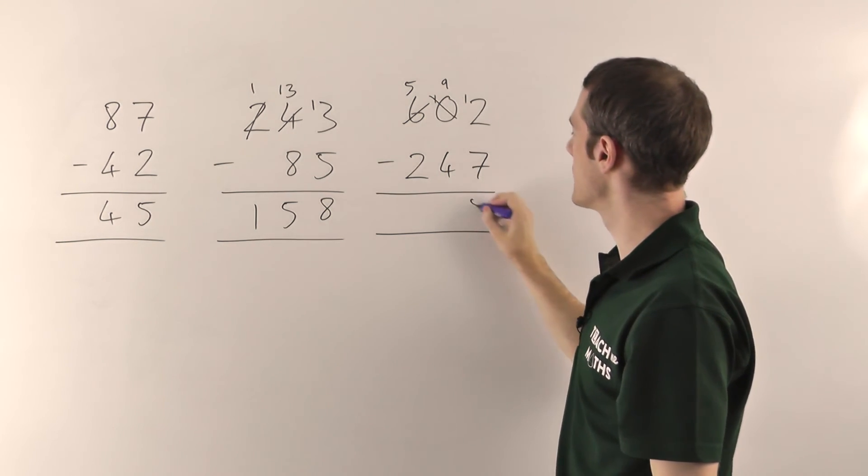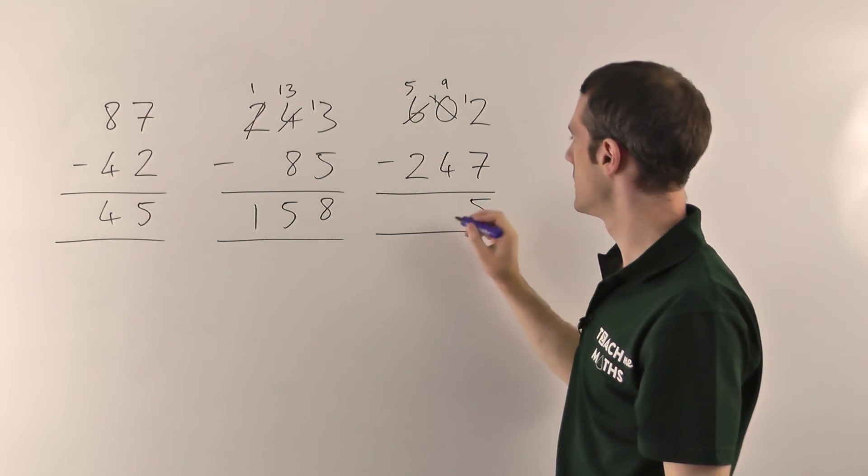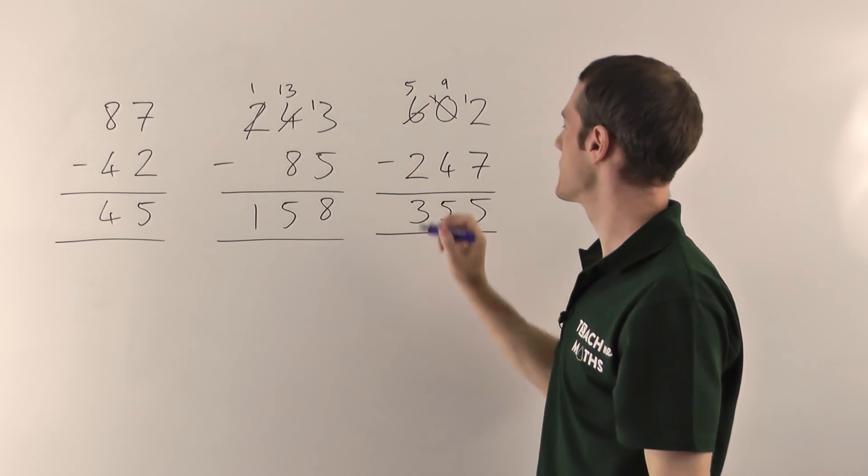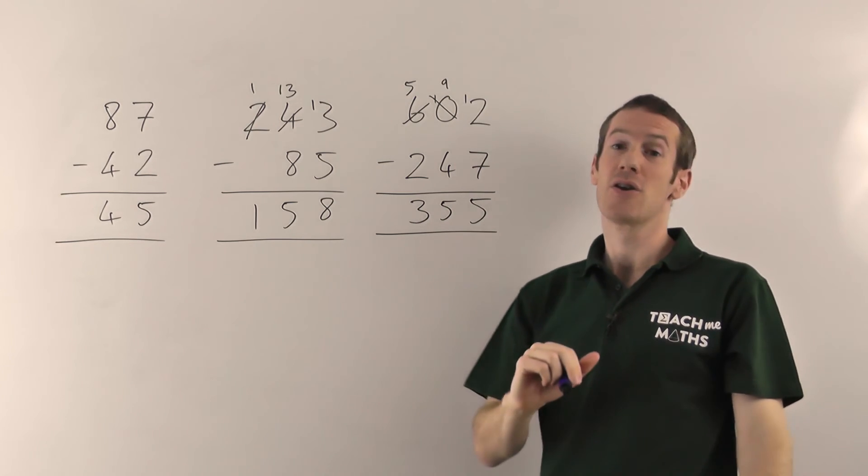12 minus 7 gives me 5, 9 minus 4 gives me 5 as well, and 5 minus 2 gives me 3. So the final answer is 355.